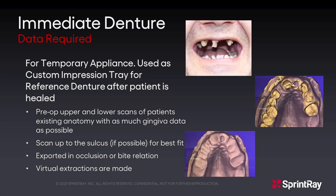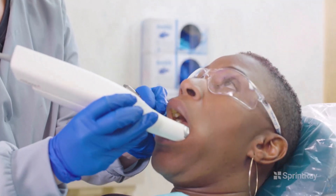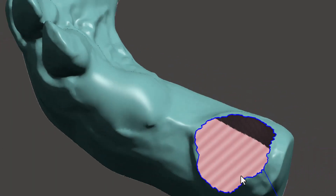With an immediate denture for use as a temporary or healing appliance, pre-op scans of the patient's anatomy as well as a bite scan will be taken and exported in bite relation. These scans will then be used for virtual extraction and a healing appliance supplied. Perform an upper, lower, and bite scan of the patient, ensure that the files are exported in bite relation, and then scan as much of the sulcus as possible for best fit.